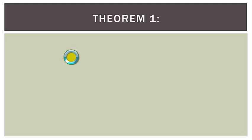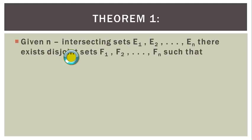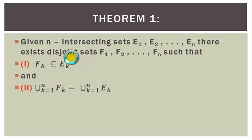Term 1: Given N intersecting sets E1, E2 to EN, there exist disjoint sets F1, F2 to FN such that: (1) Fk is a subset of Ek for all k, and (2) the union of Fk as k goes from 1 to N is equal to the union of Ek as k goes from 1 to N.